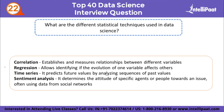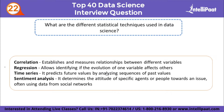What are the different statistical techniques used in data science? Correlation establishes and measures relationships between different variables, showing the relationship of features with dependent variables. Regression identifies if the variation of one variable affects others — for example, experience versus salary. Time series predicts future values by analyzing sequences of past values and is used for forecasting. Sentiment analysis determines the attitude of people towards an issue, often using data from social networks.